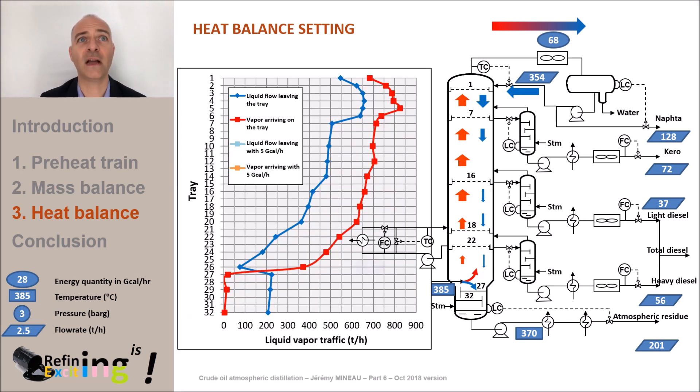Let's take an example and start arbitrarily by extracting 5 giga calories per hour. We see a high liquid flow on the tray 18 to 20. This corresponds to the pump around flow. Since 5 giga calories per hour has been removed from the column, a portion of the upward vapor is quenched and is thus condensed. This explains why we reduce the gas flow on tray 1 to tray 18. Indeed, we do not let part of the gas rise in the tower, we condense part of it.